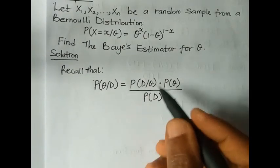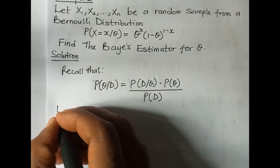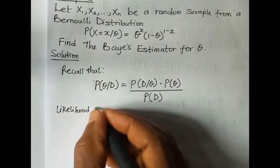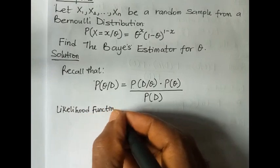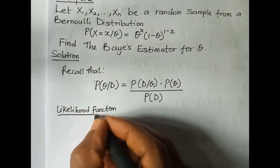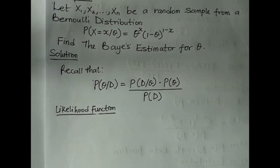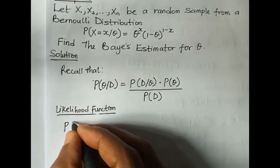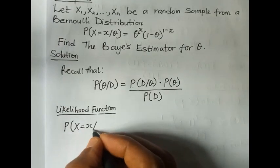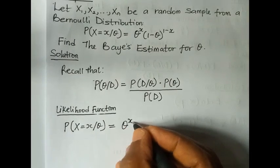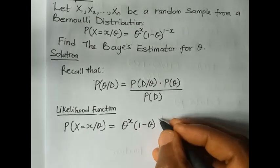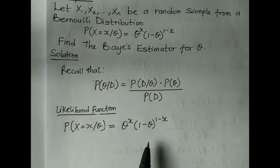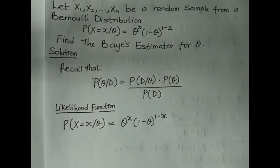The first thing we do is write the likelihood function. The likelihood function for theta given X gives us theta^X times (1 minus theta) raised to the power of (1 minus X). This represents the probability of observing X given the probability of success theta.